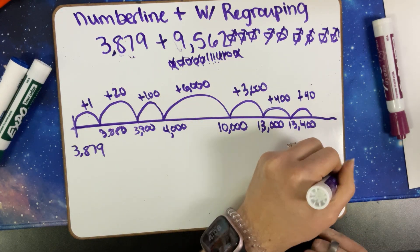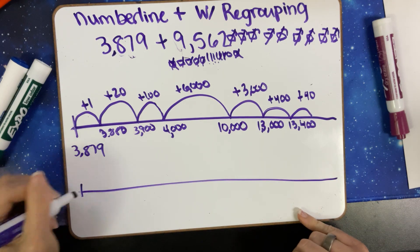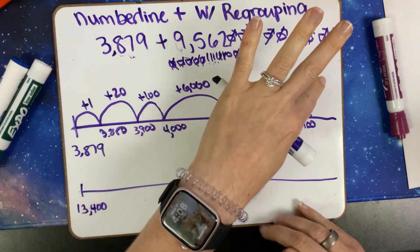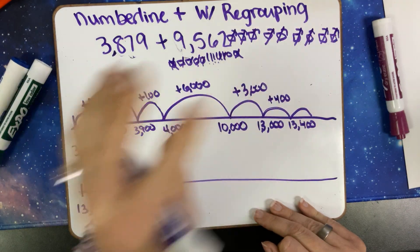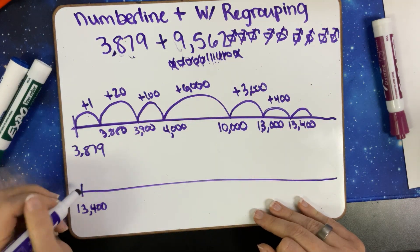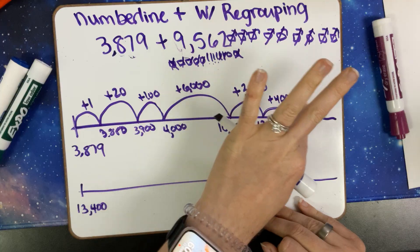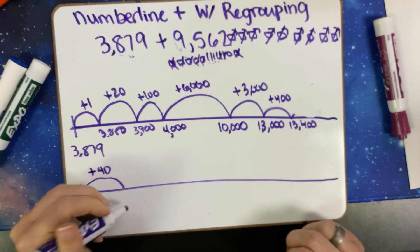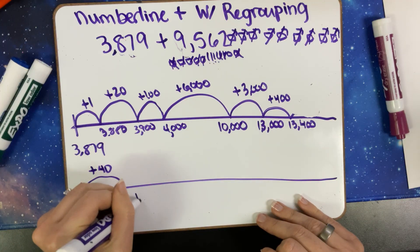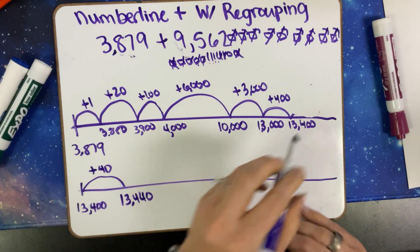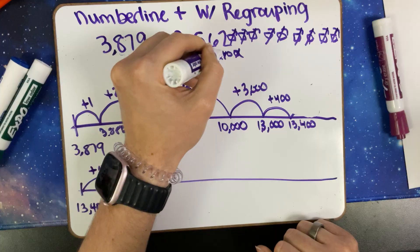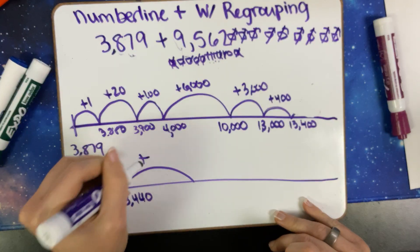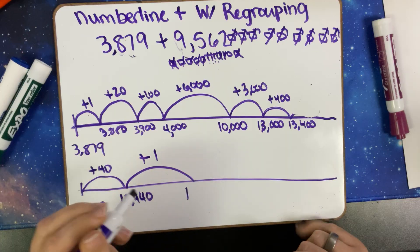I am running out of space, so we're actually going to continue our number line right here. We're going to start at 13,400—I'm sorry, 13,000, 400. Helps if I say it right. We're going to cross that off, we're going to add that same 40 so that we have space. Now we have 13,440. Now we're going to cross out our fours, we're going to look at our ones. We only have one more to add, so we have 13,441.